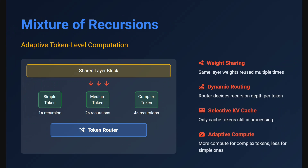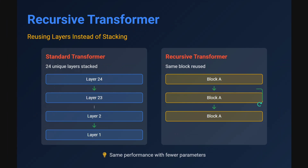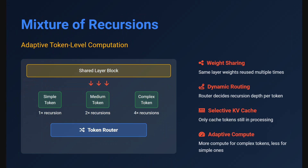Now we jump to Mixture of Recursions. What Google DeepMind has released is adaptive token-level computation. Going back to the recursive transformer — one limitation is again the concept of simple versus complex tokens. If the next token to predict is 'the', which is easy, you won't require block A to repeat many times — just a couple of times to get the prediction. While for a more complex token, the block should repeat more times. This is what Mixture of Recursions does. A simple token might go through one recursion, a medium-complexity token might go through two, and a highly complex token might go through many more recursions.